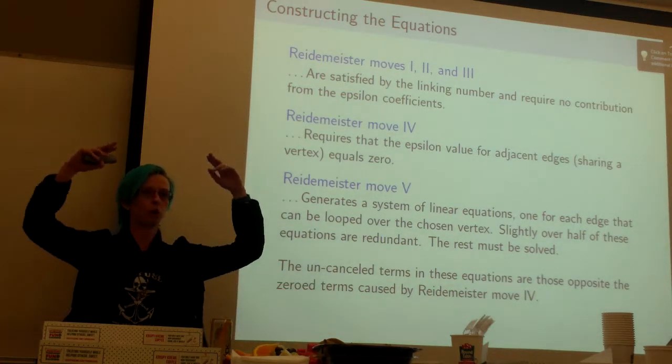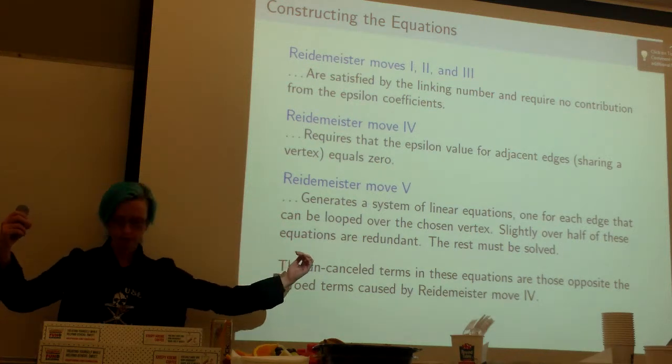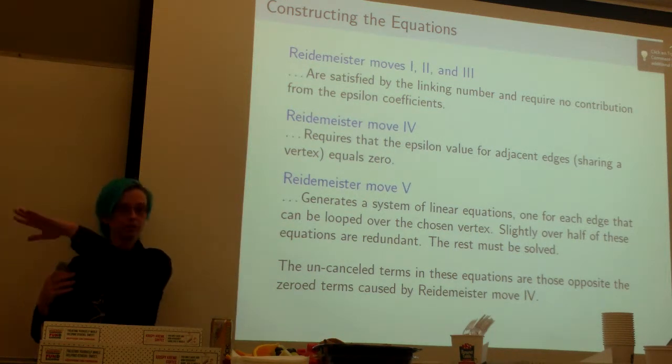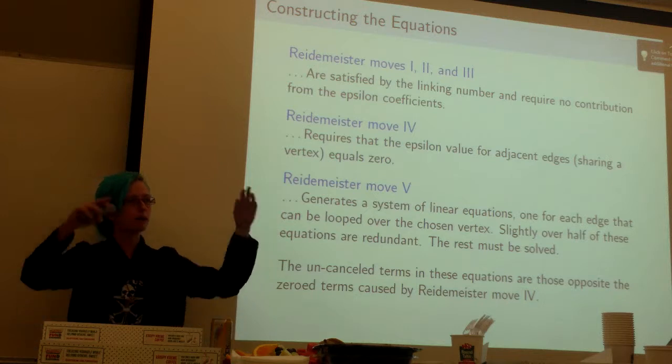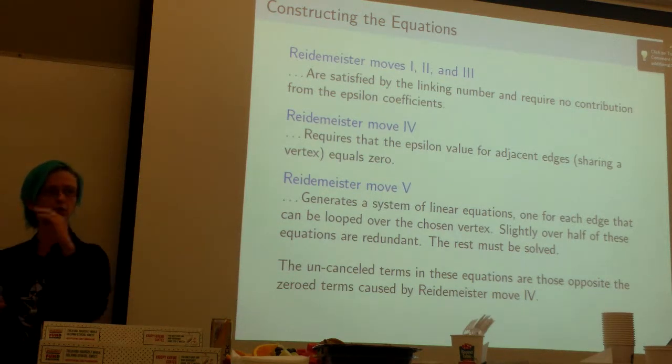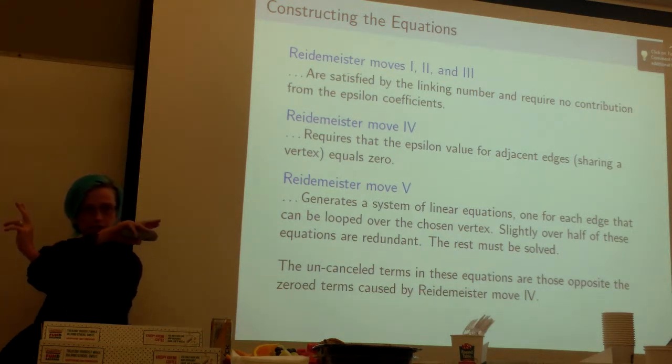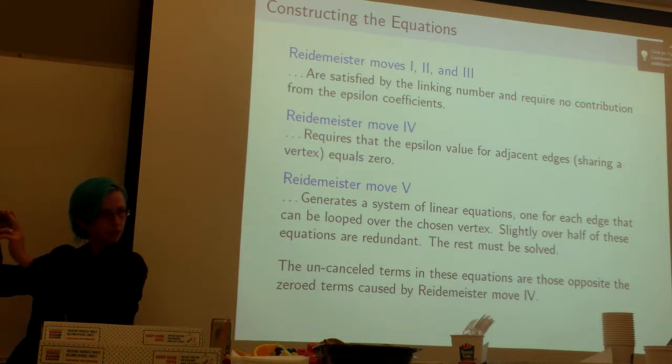Then we look at Reidemeister move five. Remember this is where you have all this stuff coming out into and out of a vertex and you're pulling one edge over. This creates a system of linear equations. Every edge that you could possibly loop over, you've got a whole new linear equation for every one that has a term for every one of those places it crosses.